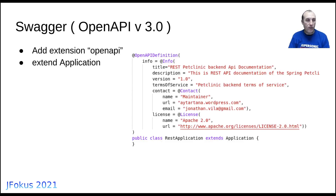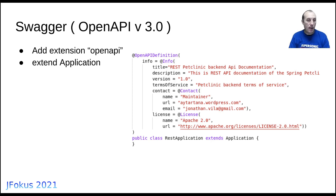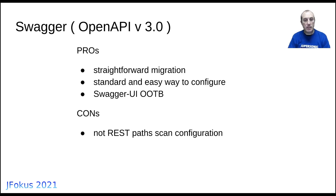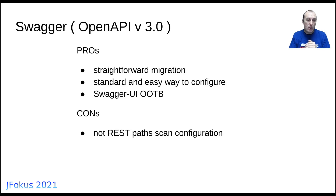Regarding Swagger/OpenAPI, you add the OpenAPI extension, create a class extending Application, and add the @OpenAPIDefinition annotation with all your API configuration. The only drawback I found is that with Spring you can specify which paths to include in the Swagger definition, but with Quarkus I didn't find a way to do this, so all resources were added to the Swagger definition.